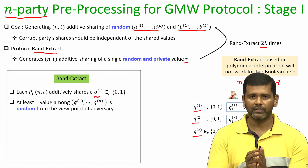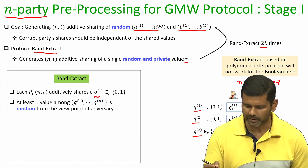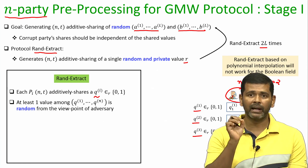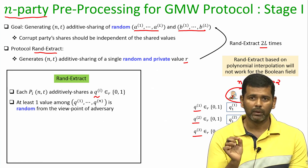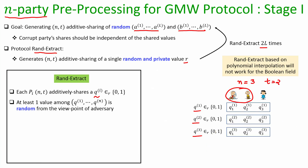Since there is at least one honest party among the n parties, assume for simplicity that P1 and P2 are the corrupt parties. They know the full values Q1 and Q2, but they do not know what the bit Q3 is — that comes from the privacy property of additive secret sharing. For Q3, P1 and P2 together jointly hold two shares, but the third share is missing for them, so it could be any random share and hence Q3 could be any random bit.